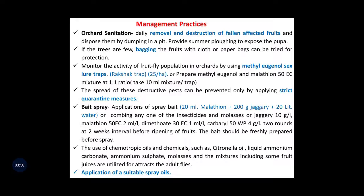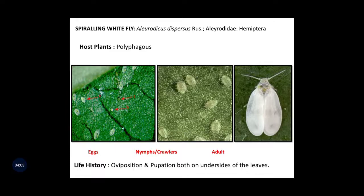The second major pest of Guava is spiraling whitefly, i.e., Aleurodicus dispersus. It belongs to family Aleyrodidae and order Hemiptera. Hence the damaging stage is always nymphs and adults. This pest is polyphagous in nature, meaning it feeds on a number of plants. Here we can see three different life stages: first, the eggs; then nymphs, also called crawlers; and in the last image we can see the adult of spiraling whitefly.